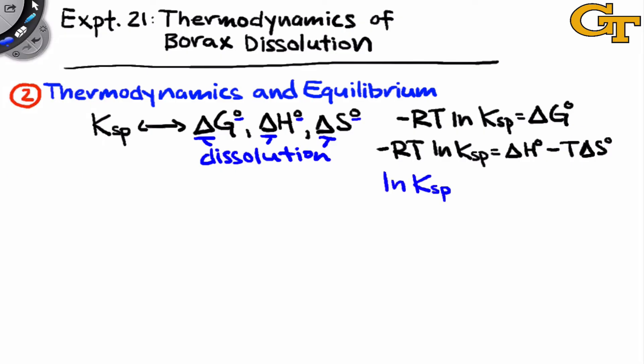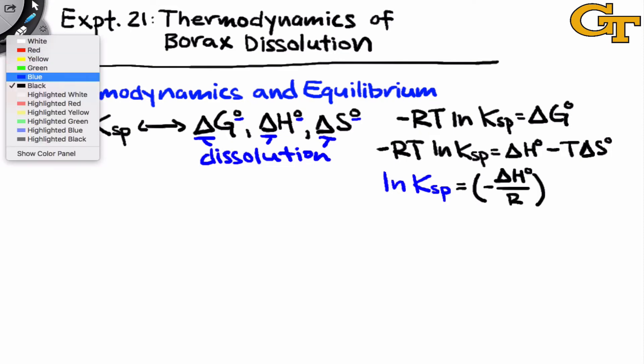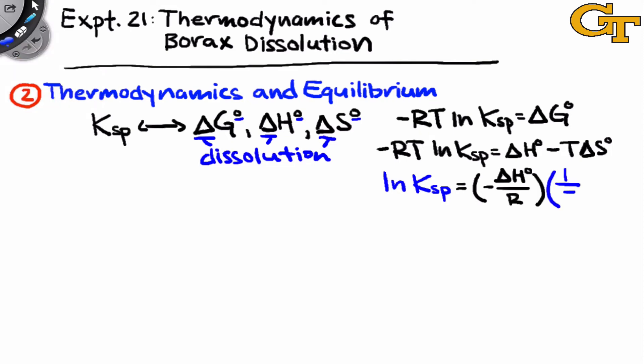Let's divide both sides by negative RT and collect the terms a little bit. So the natural log of Ksp on the left is equal to, on the right, negative delta H over R times 1 over T, and you'll see in a moment why I'm writing natural log of Ksp and 1 over T in blue, plus delta S over R.